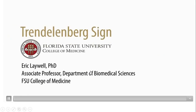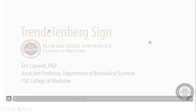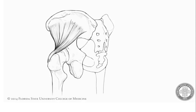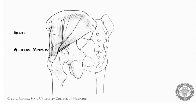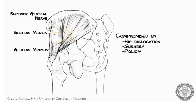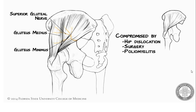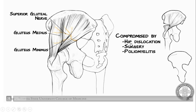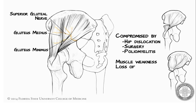The Trendelenburg sign results from unilateral disrupted function of the primary hip abductor muscles — gluteus minimus and gluteus medius — both innervated by the superior gluteal nerve. Their function can be compromised by damage to the nerve resulting from hip dislocation, hip surgery, or disease such as poliomyelitis. Direct damage to the muscle bellies or avulsion of their distal attachment from the femur can also lead to weakness or loss of hip abduction.